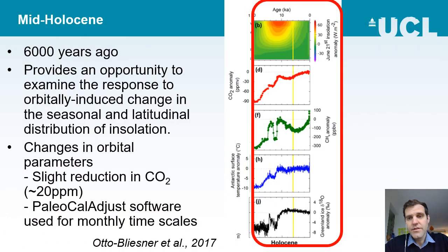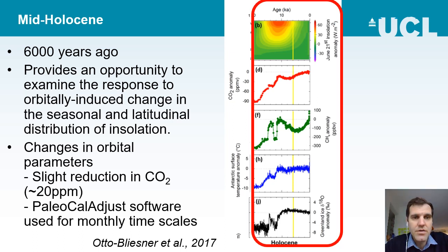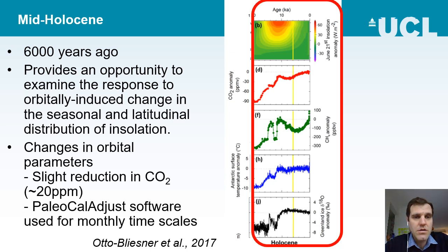I'll just briefly outline what the mid-Holocene is. The Holocene is the past 11,000 years. The mid-Holocene is taken to be 6,000 years ago, which originally was thought of as the Holocene Climate Optimum — the warmest temperatures in the Holocene. There's a little bit of discussion about whether that's still valid, but from a modelling point of view we've kept this same simulation since the 90s, allowing benchmarking between different generations of the model. So here we're maintaining it to be 6,000 years ago.